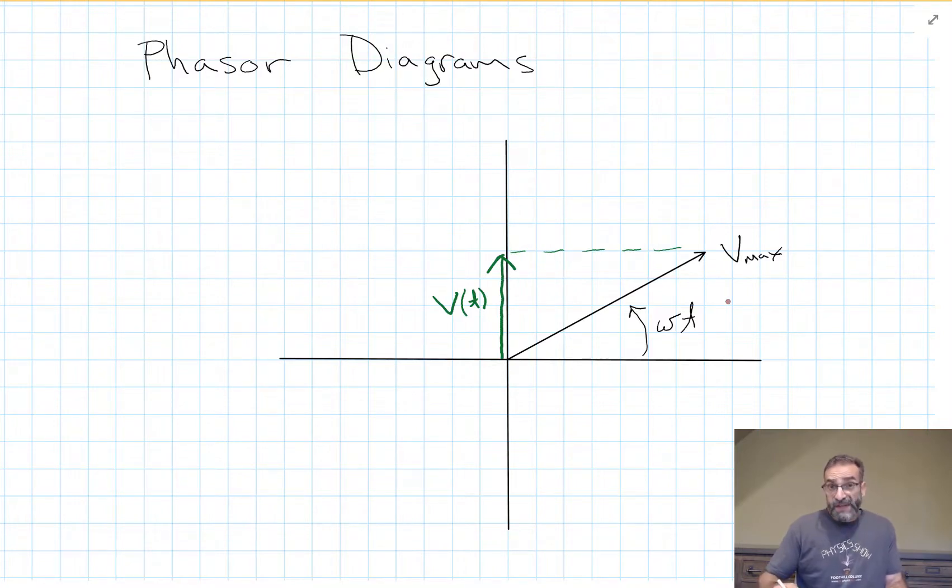So if I started at t equals zero with my V maximum vector pointed along the horizontal axis, there'd be no voltage on my device at that instant. And as it sweeps out through the first quadrant, eventually I get to a point where I have my maximum voltage across my device. And then it reduces again. Remember, this is an AC circuit. Eventually it would go back to zero voltage on my device.